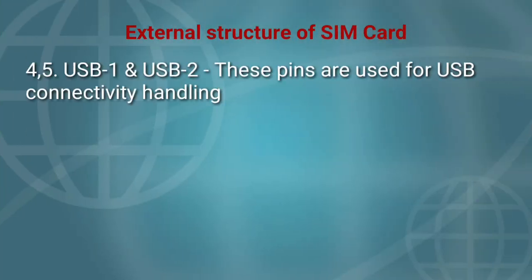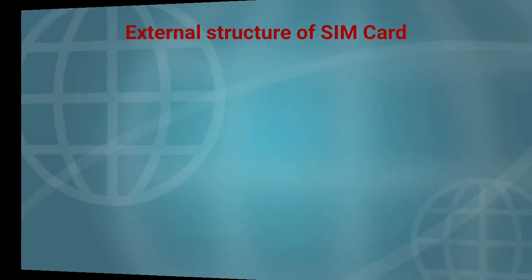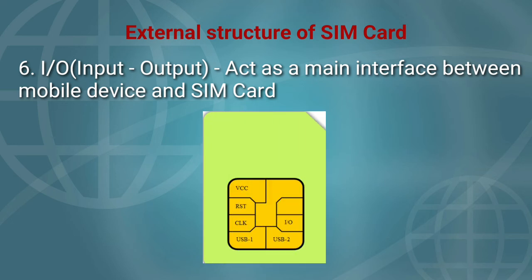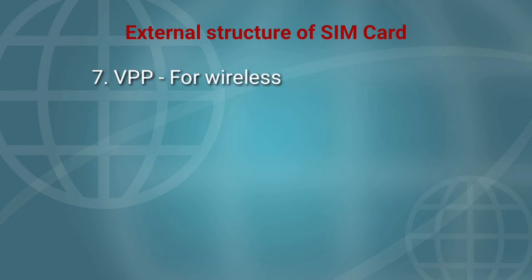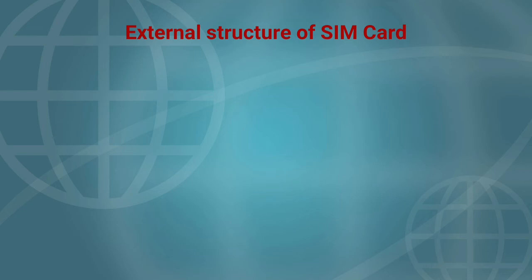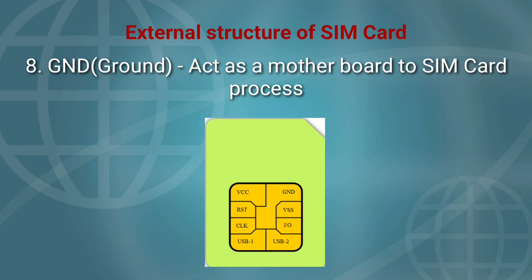4 and 5. USB 1 and USB 2 — these pins are used for USB connectivity handling. 6. I/O, Input or Output — acts as the main interface between the mobile device and the SIM card. 7. VPP — for wireless connectivity. 8. GND, ground — acts as a motherboard to the SIM card process.